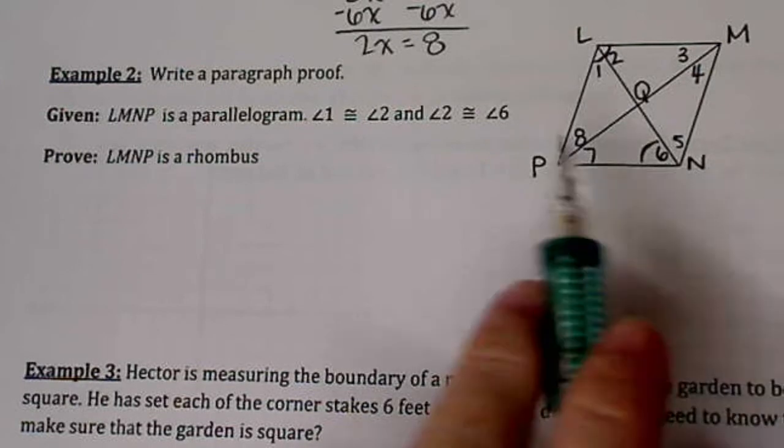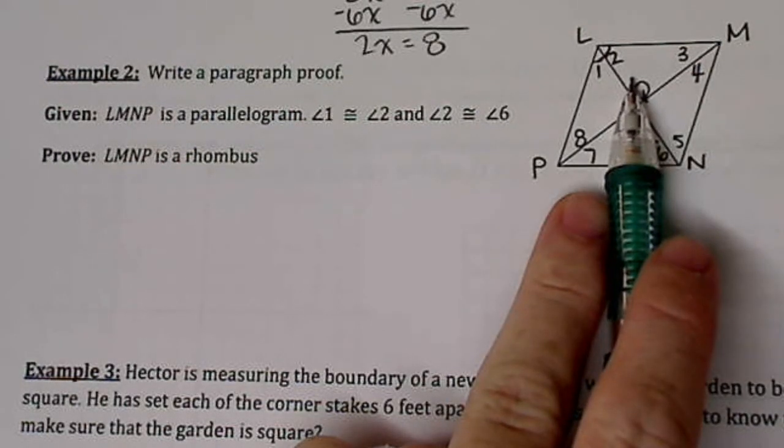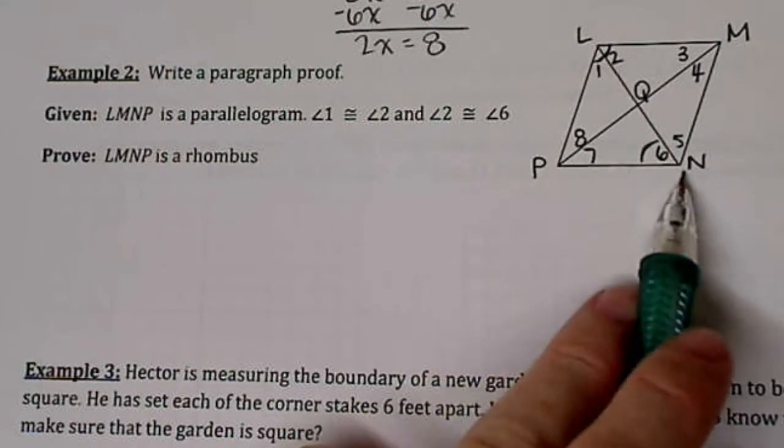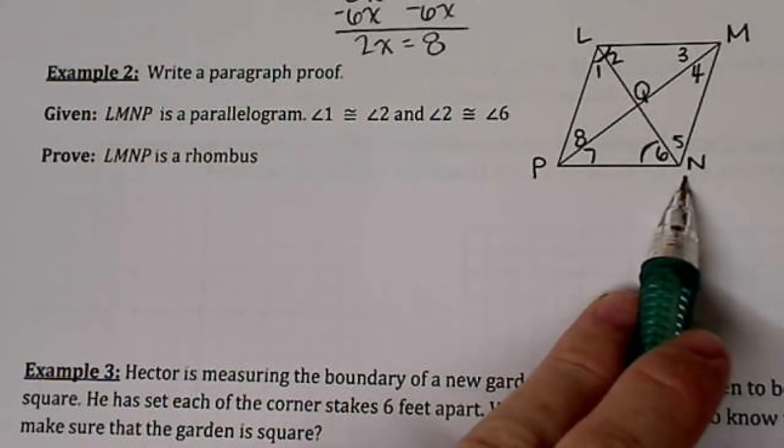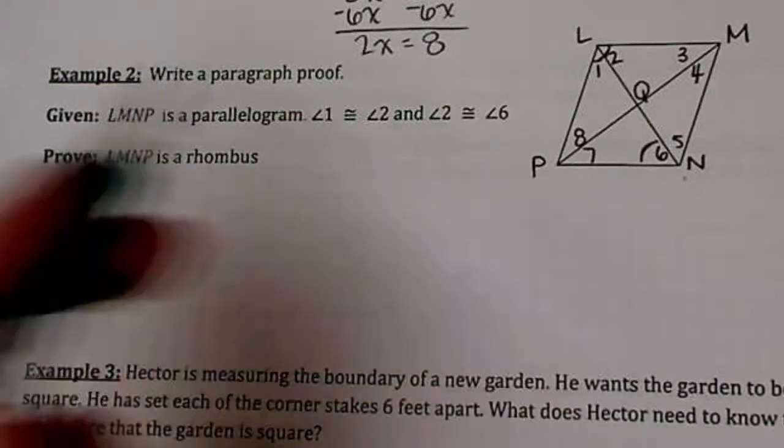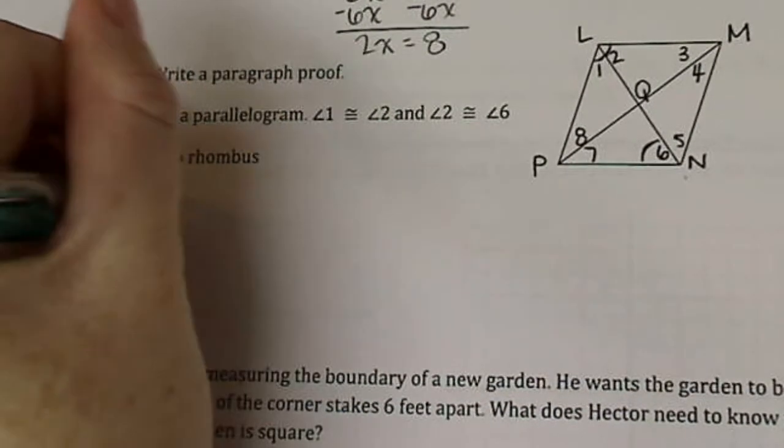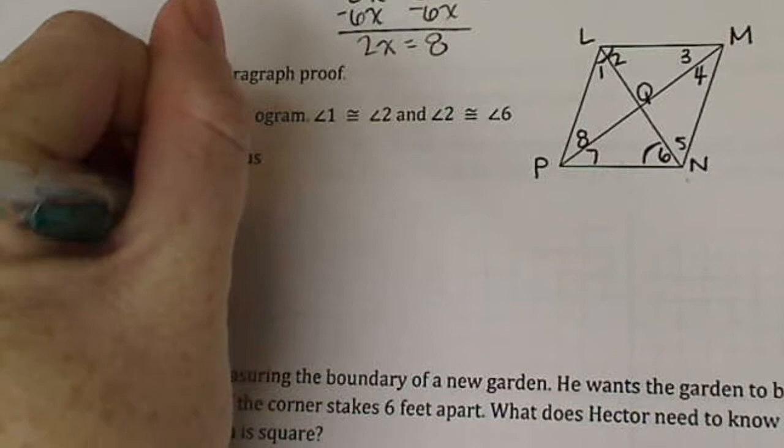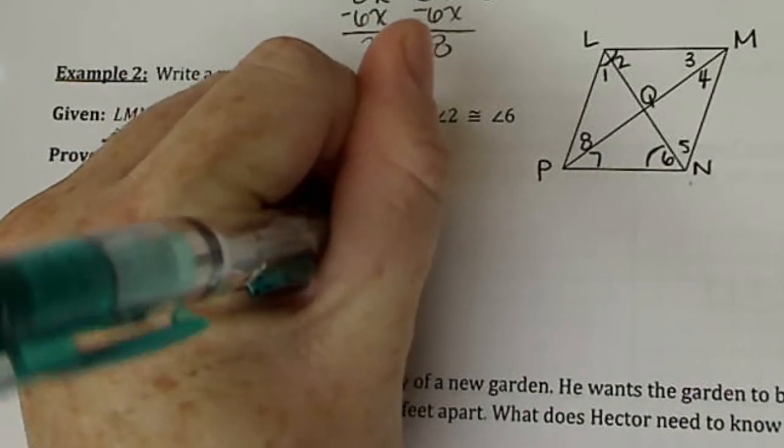So we want to prove that this shape is a rhombus. Well, if angle 1 is congruent to angle 2, that must mean that this line right here, this diagonal LN, must bisect angle L and angle N. So let's go ahead and state that. LN bisect angle L and angle N.